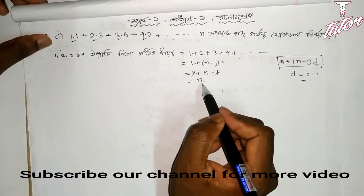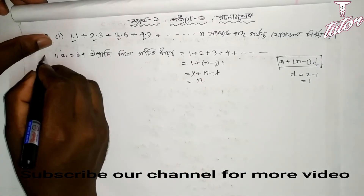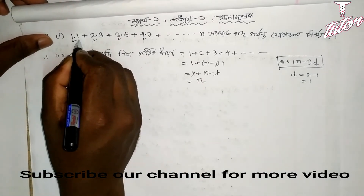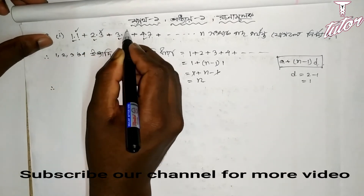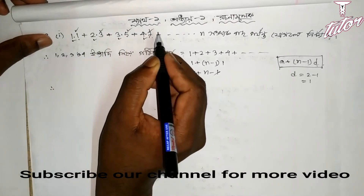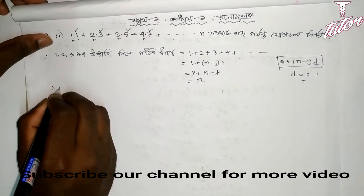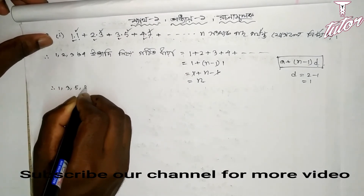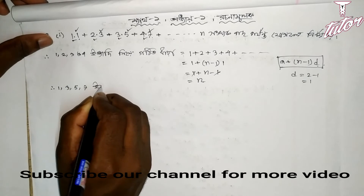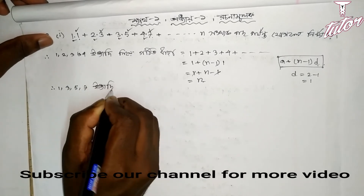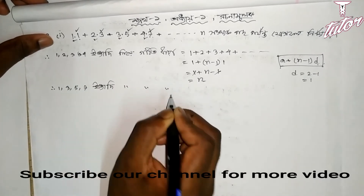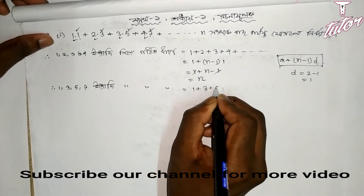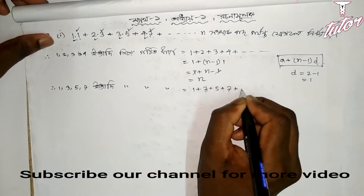I will ask you to give this question. The series is 1, 3, 5, 7, 9 — these are the odd numbers. Then 1, 3, 7, 7, 8 — let me check. The pattern is 1, 3, 5, 7, 8. This series of odd numbers follows a pattern.